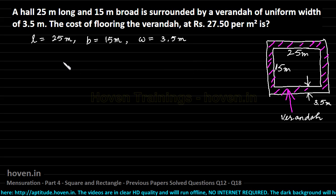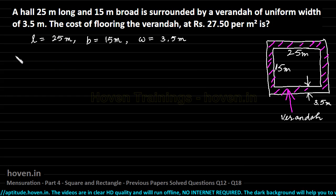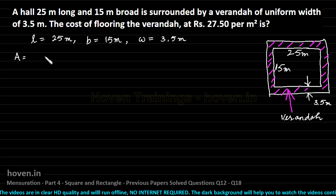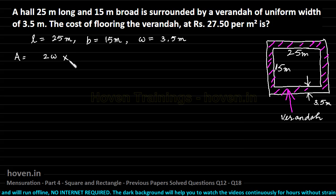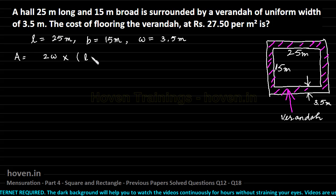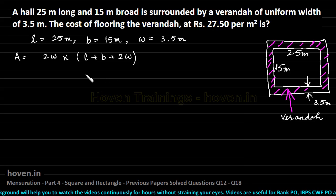The formula for the area of the veranda, that formula we have already derived earlier, says that the area is equal to 2w multiplied by length plus breadth plus 2 into width. This is the formula that we have derived earlier.